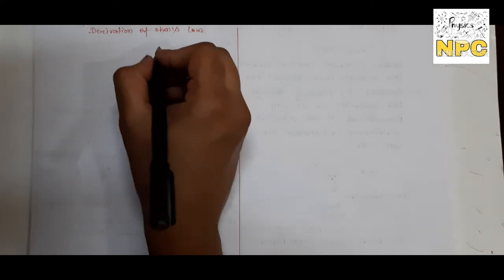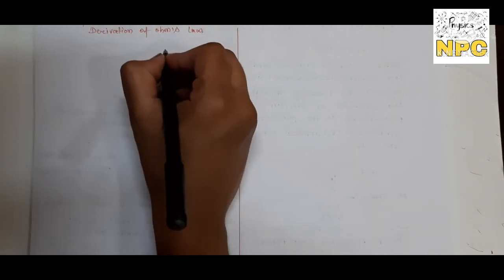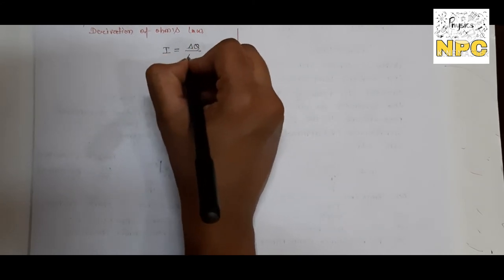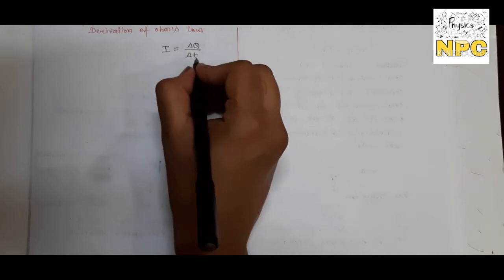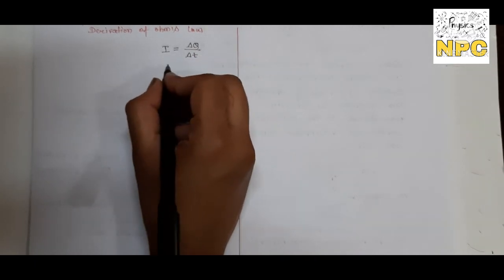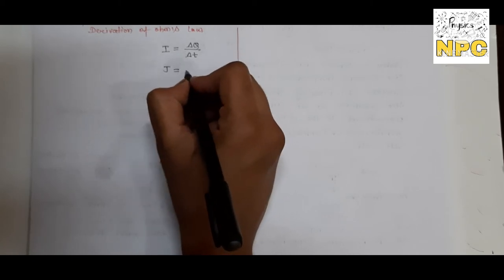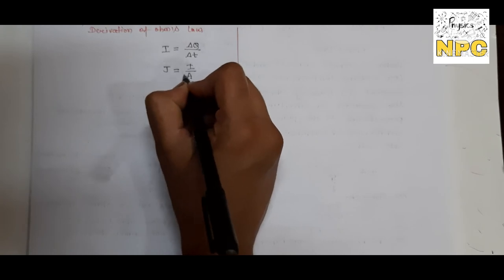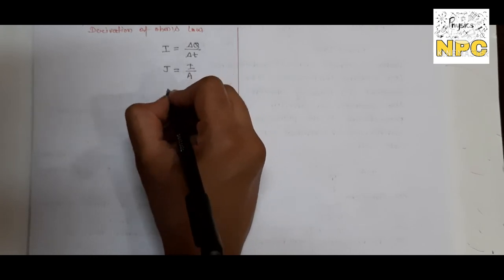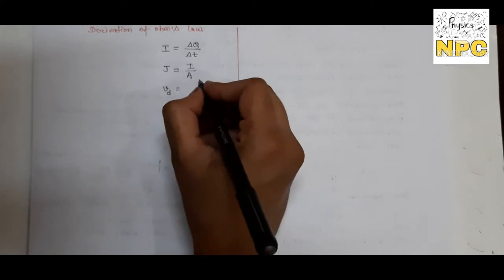Now, derivation of Ohm's Law. For this we go back to our last lectures and recall all the formulas derived there. Electric current: I = dq/dt for a particular instant of time. Current density: J = I/A, current per unit area.